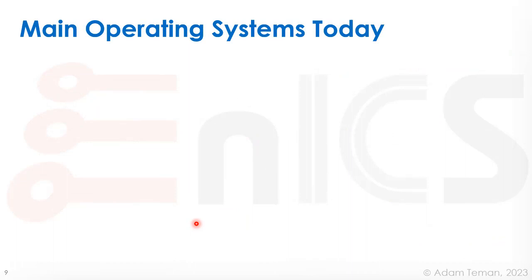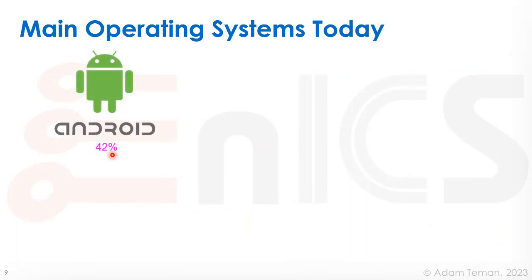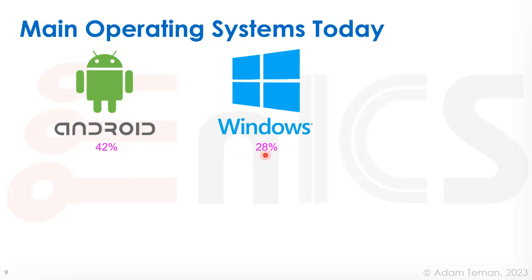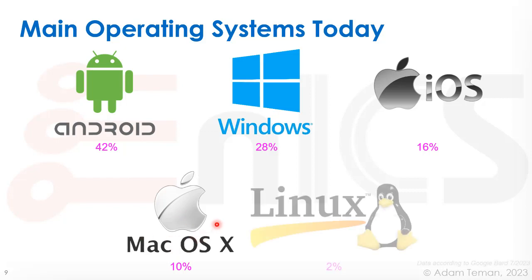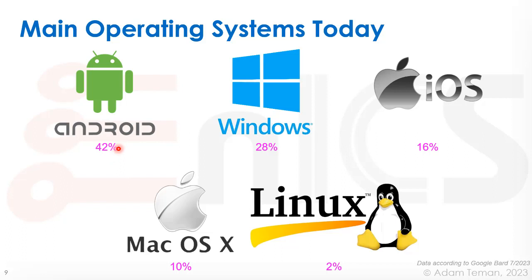Today, Android is the leading operating system in the world with 42% of devices, which is Linux-based. Windows has a 28% share as of 2023, iOS has 16%, Mac OS X has 10%, and Linux is only 2%. But Linux is the basis for Android and powers a lot of servers — the backbone of the internet. This data is from Google Bard, taken in July 2023.